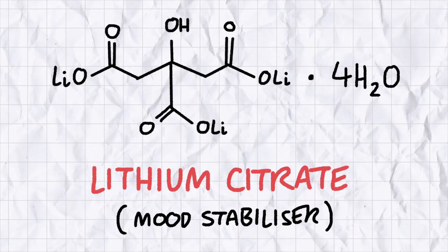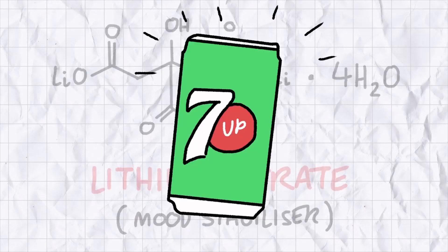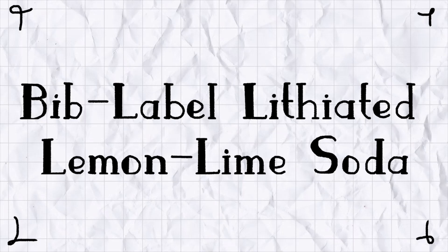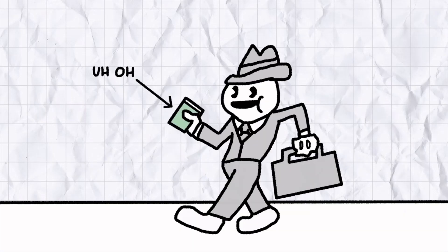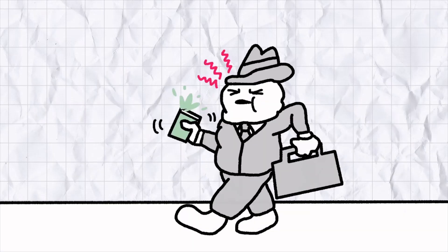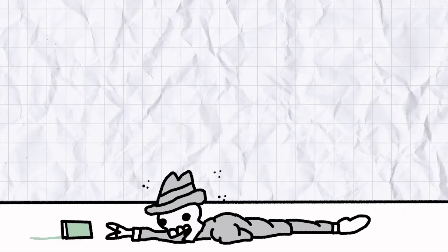Lithium citrate, now prescribed as a powerful mood stabilizing drug, was actually added to the soft drink 7-Up in the 1920s as a pick-me-up, or as the drink was originally known, bib label lithiated lemon lime soda. Unfortunately, lithium salts come with their fair share of side effects: headaches, hand tremors, weight gain, nausea, and potentially lethal kidney failure among them.